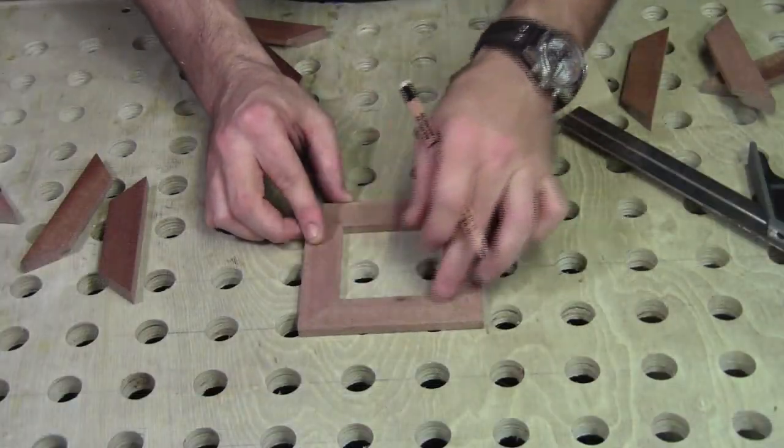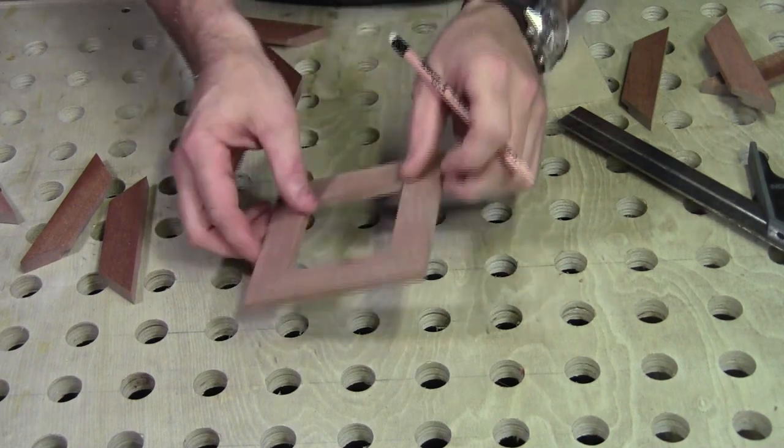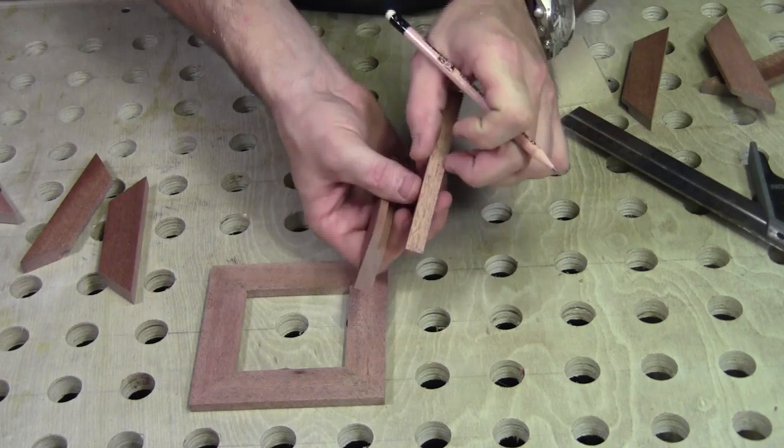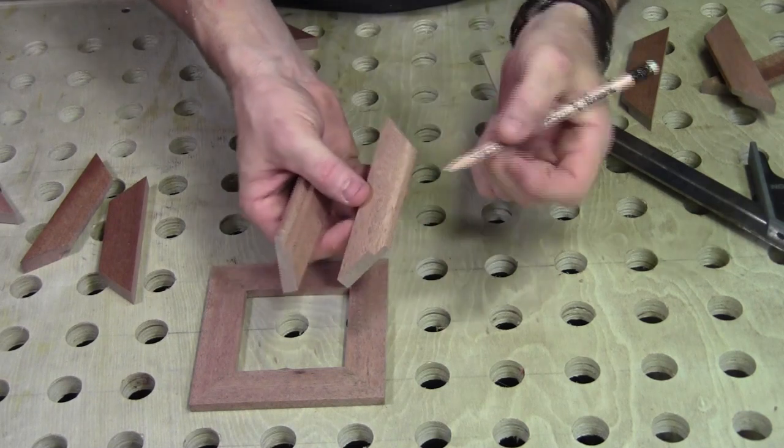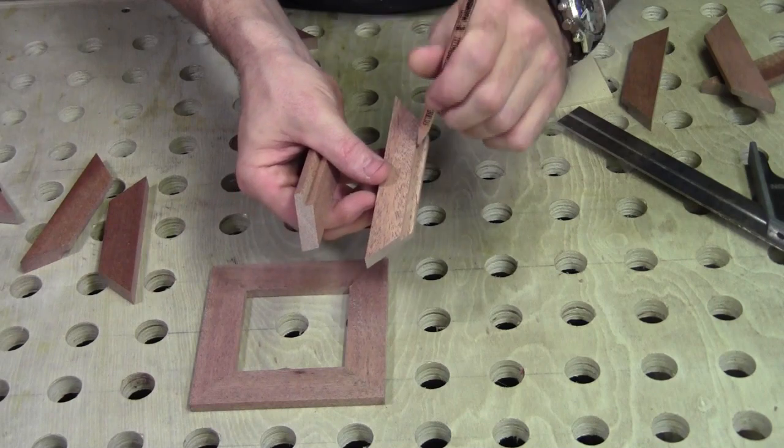Okay guys, our outside frame pieces are five sixteenths of an inch thick. Our inside frame pieces are seven sixteenths of an inch thick. They have a quarter inch rabbet, three sixteenths of an inch deep.